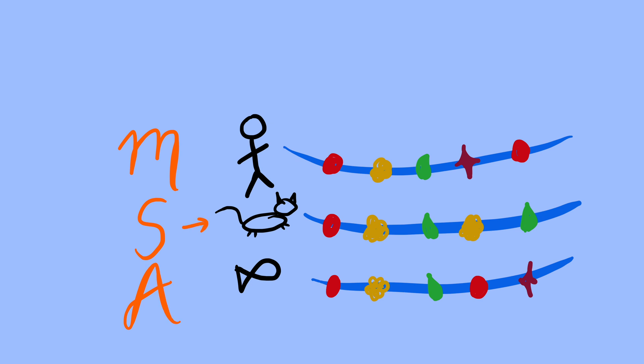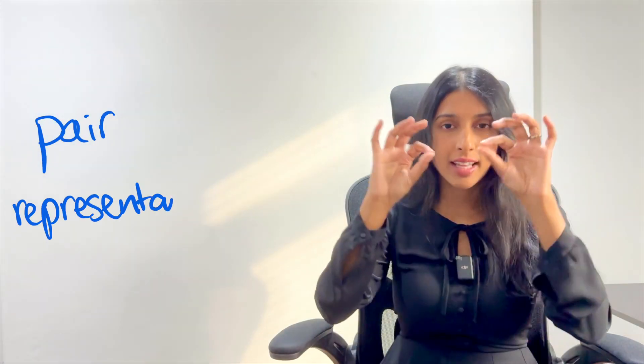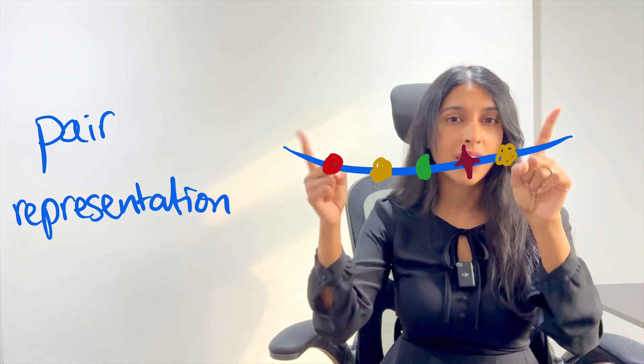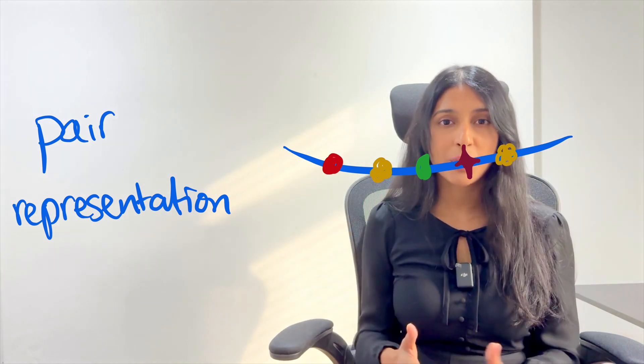But there's also another representation that's important, which is called the pair representation. It takes that single protein that we care about, and then looks at pairs and sees how they interact with each other.